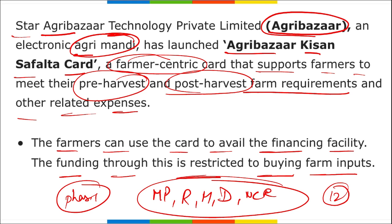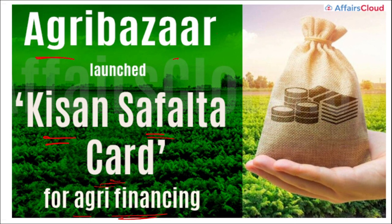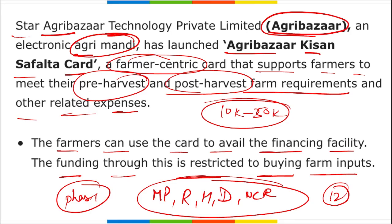The card amount for marginal farmers can range from ₹10,000 to ₹50,000. The CEO of Agri Bazaar is Amit Agarwal, it was established in 2016, and its headquarter is in Mumbai, Maharashtra. Remember: Agri Bazaar, an e-marketplace, launched the Kisan Safalta Card for pre- and post-harvest agriculture financing, limited to farm produce purchases, with a 12-month repayment option.